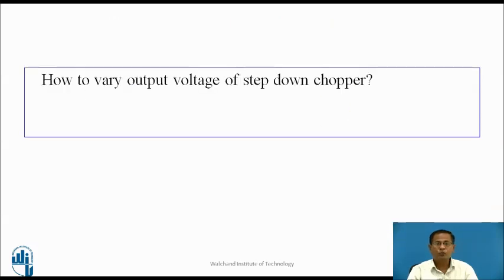In the step-down chopper, output voltage equals K × V_in. When K equals zero, output voltage is zero. When K equals one, output voltage equals V_in. By varying K from zero to 100%, the output voltage changes from zero to V_in.